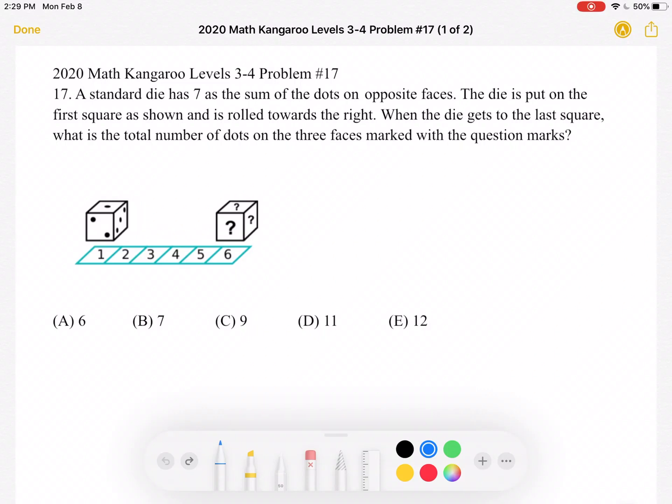This is the 2020 Math Kangaroo Levels 3-4, problem number 17. A standard die has 7 as the sum of the dots on opposite faces. The die is put on the first square, as shown, and is rolled toward the right. When the die gets to the last square, what is the total number of dots on the three faces marked with the question marks?